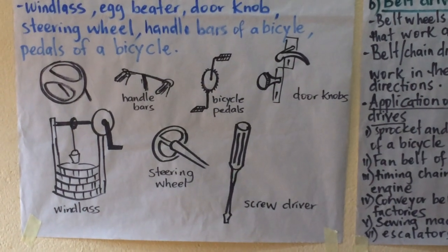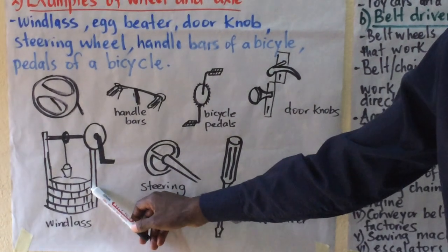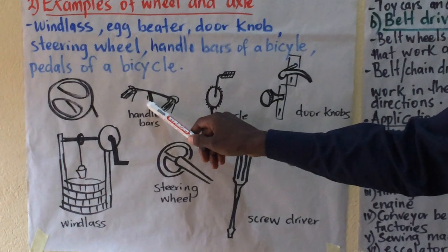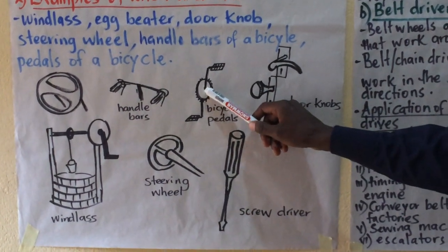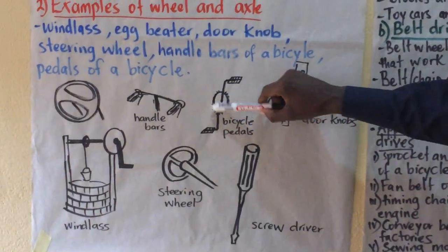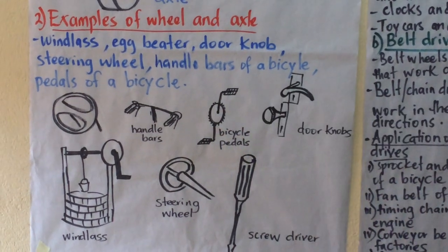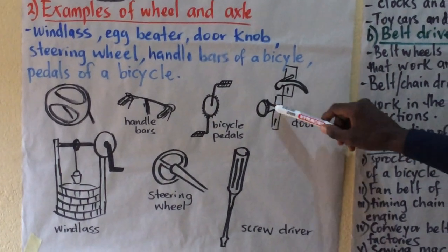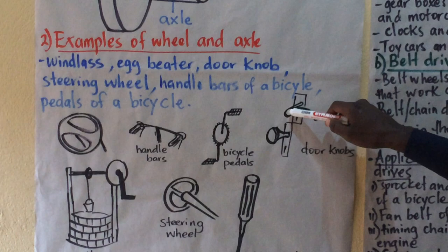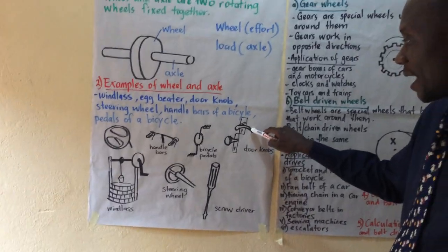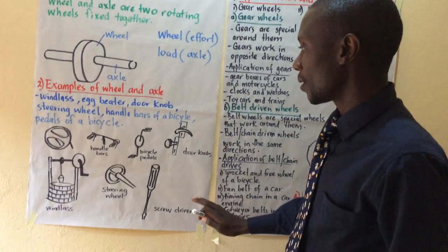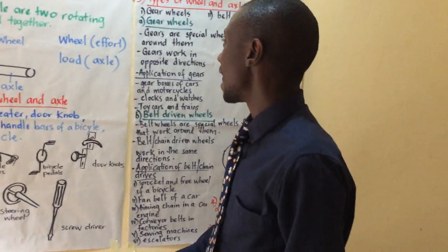I've tried to draw some pictures here. The steering wheel is here, the windlass — the windlass is used for drawing water from down there. The handlebars of bicycles and motorcycles, and these are the bicycle pedals. This one rotates — that is the bigger wheel — and the smaller wheel there will be acting as the axle. Then we have doorknobs — you turn this when you're opening. Normally these doorknobs have a long effort arm, especially the door handle, so that you can use less effort.